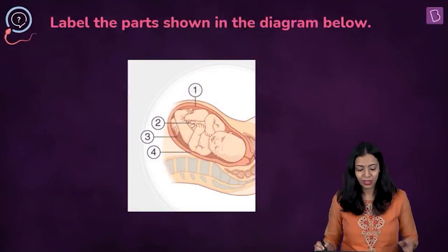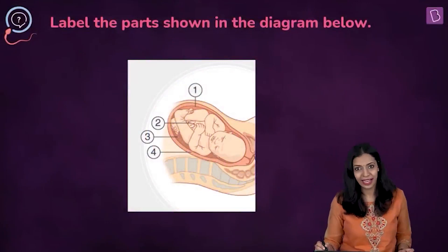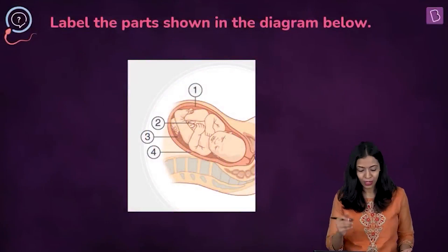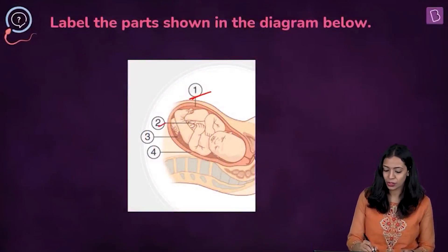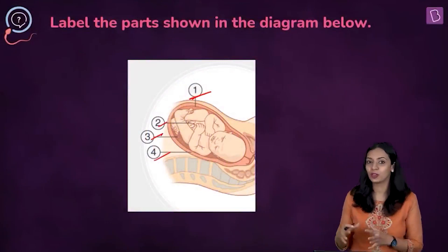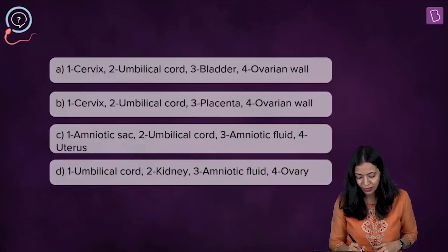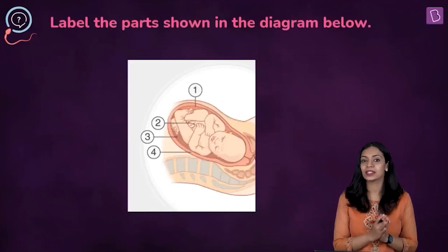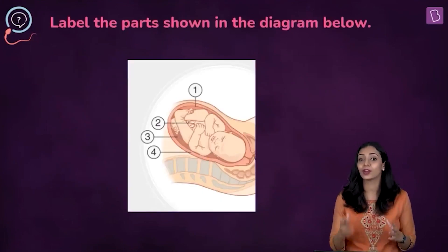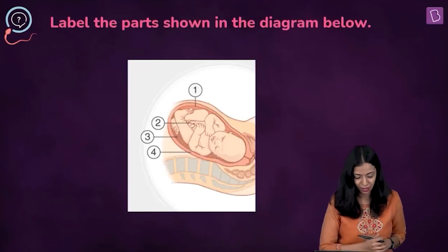Here's the next question: label the parts shown in the diagram. There are four labels — one, two, three, and four — and we have to label them correctly. Before looking at the options, let's examine the diagram in detail. Label four here represents the wall of the uterus.